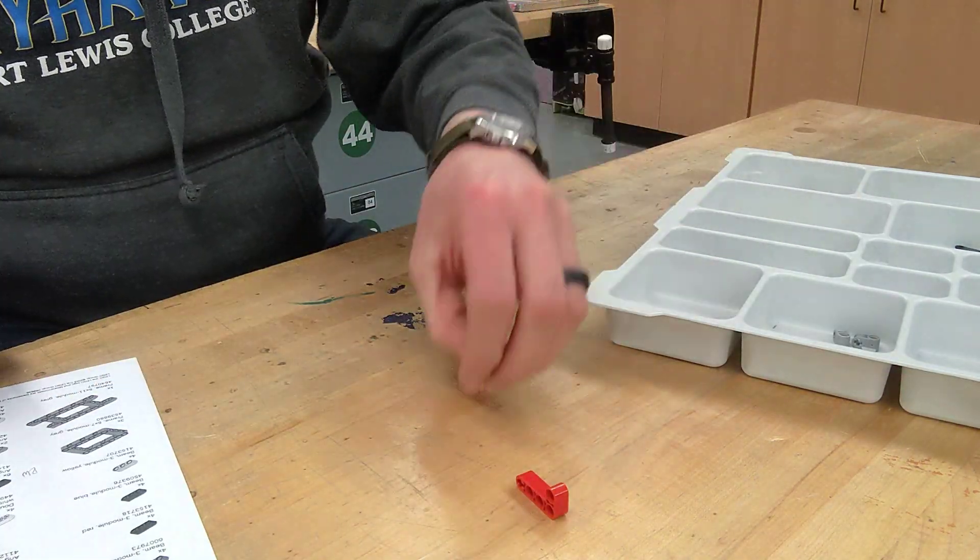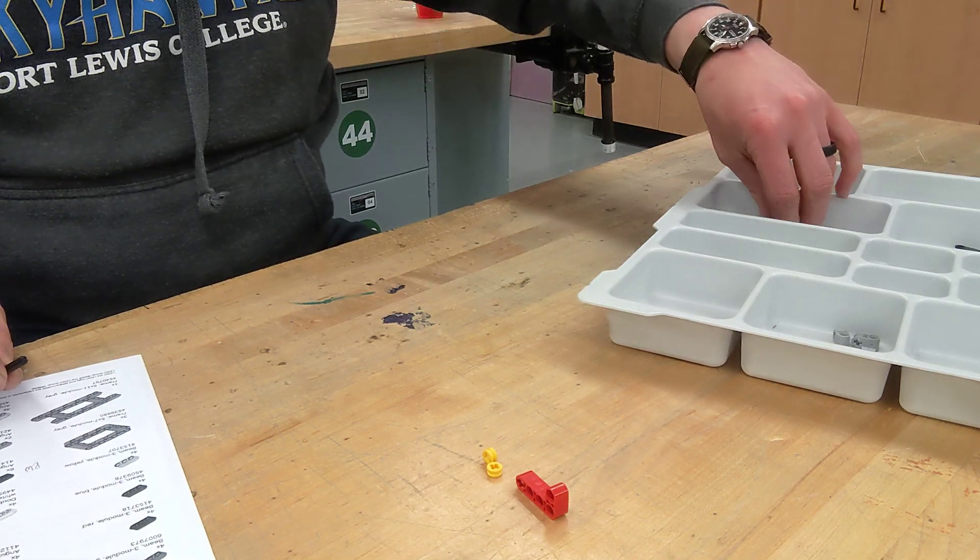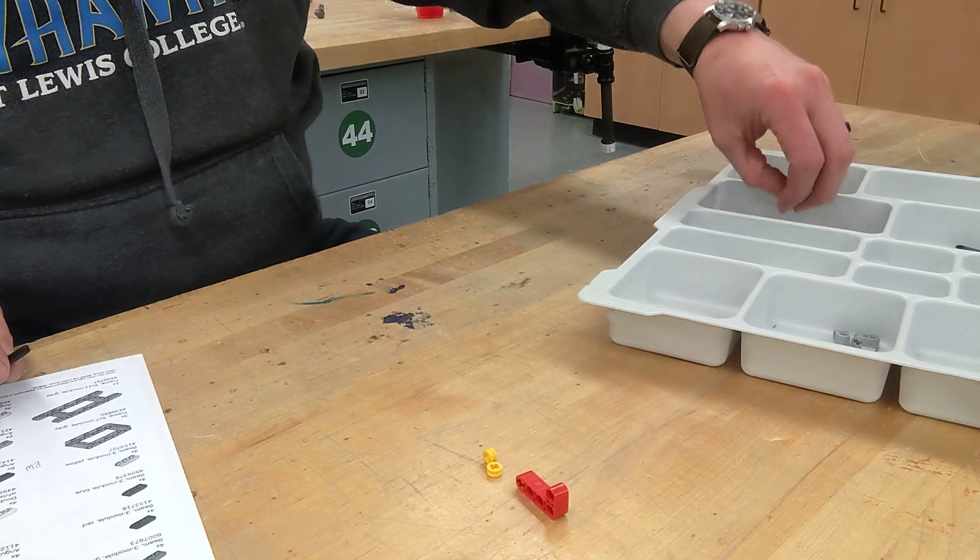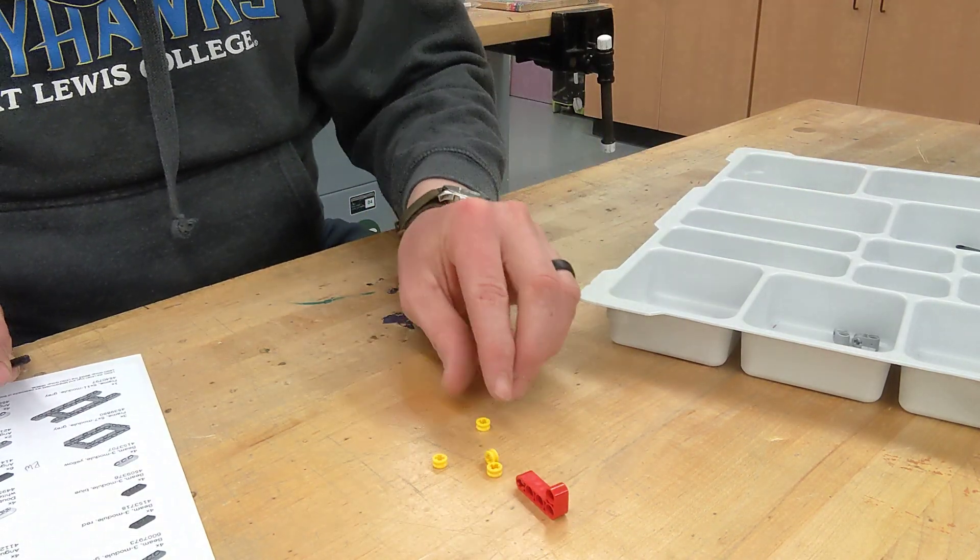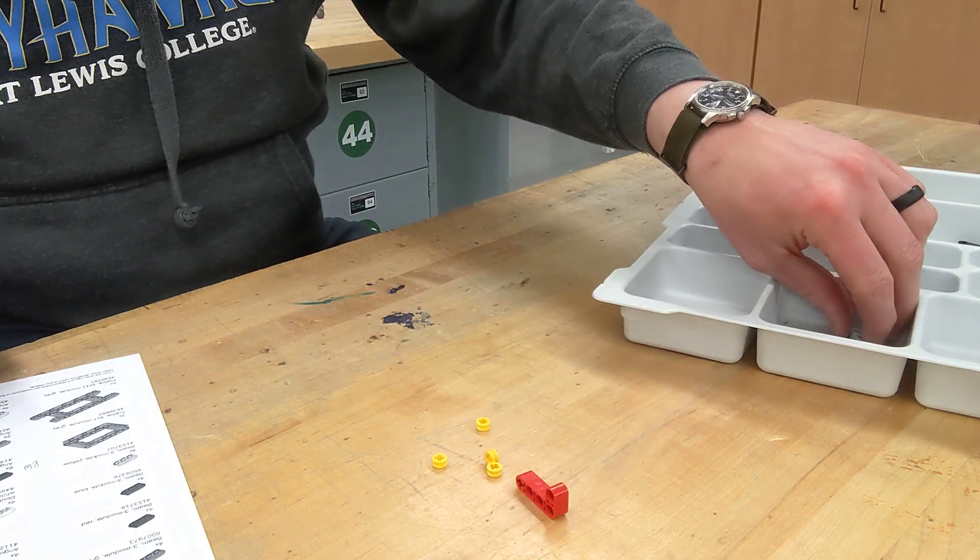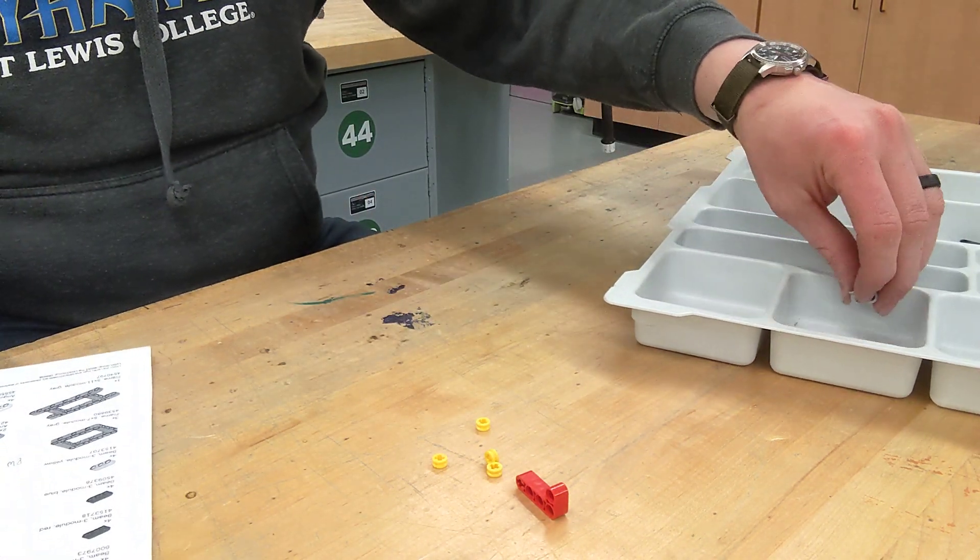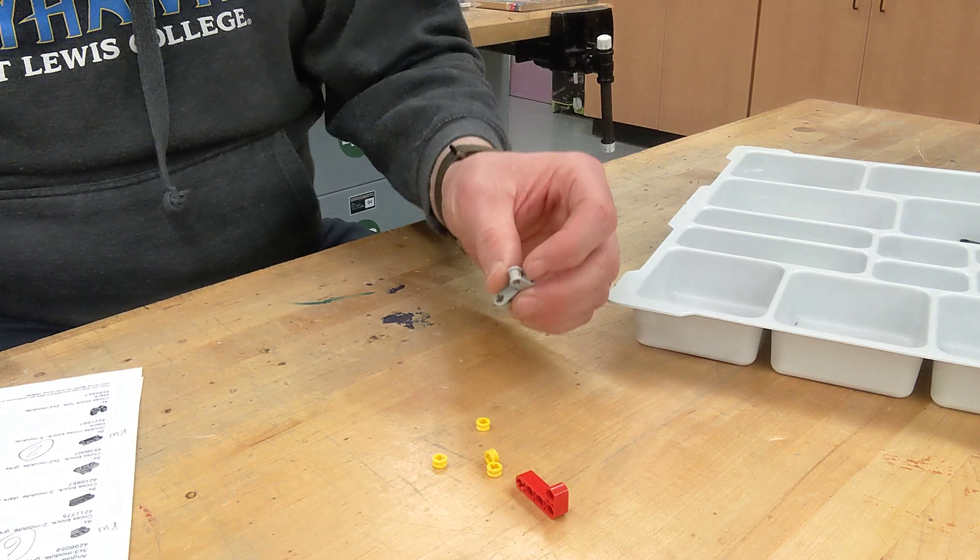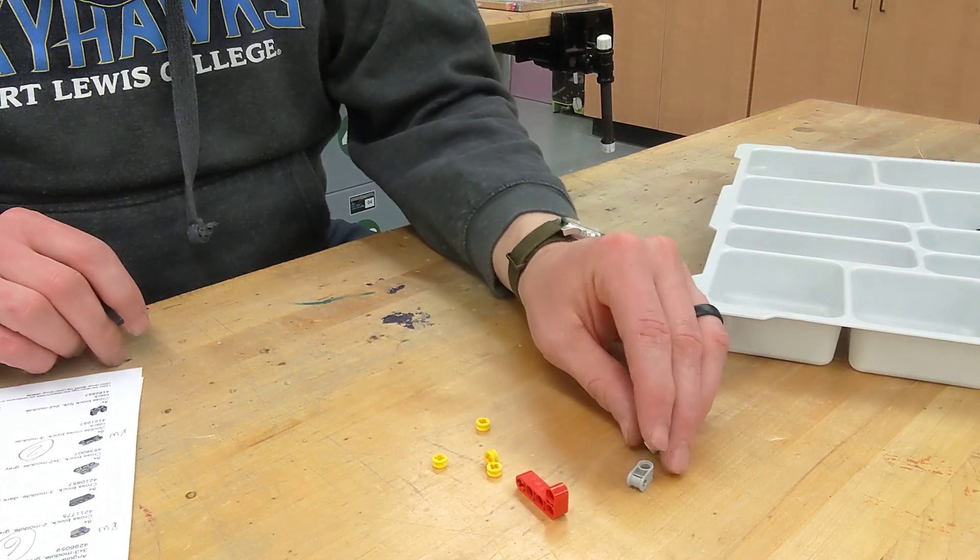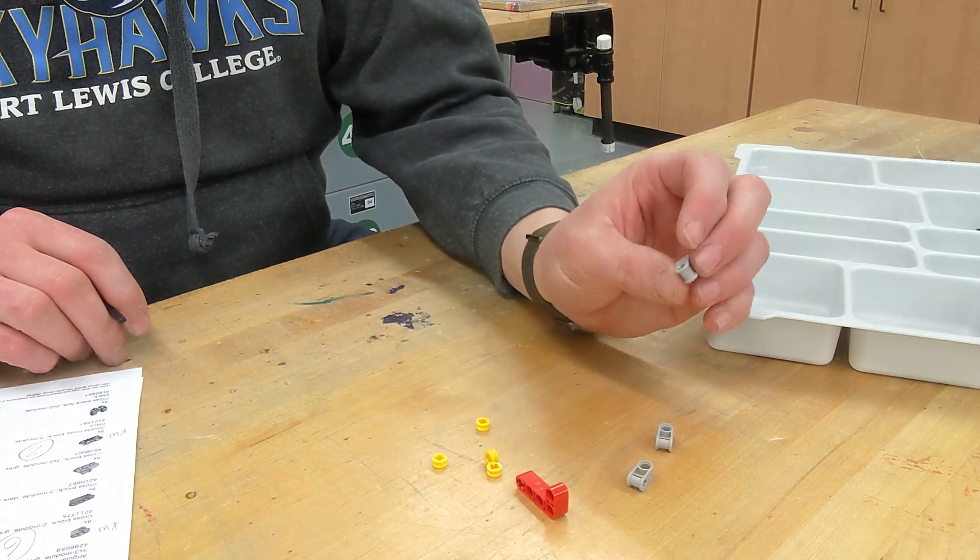So we're also going to need to start with these bushings, these small bushings here. These are half mods, right? So a half module bushing. And then we're going to need some of these here which are called cross blocks, two modules.